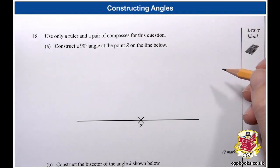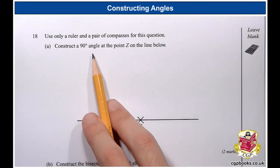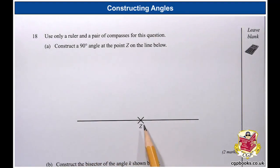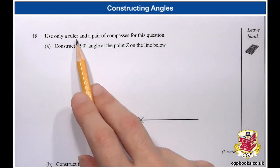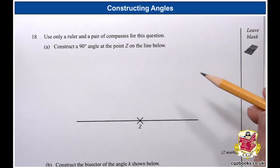So this question is on constructing angles and let's jump straight in here with this first part, which says to construct a 90 degree angle at the point Z on the line below. So here is point Z and we're told we can use a ruler and a pair of compasses, which is quite good because that's exactly what we need.